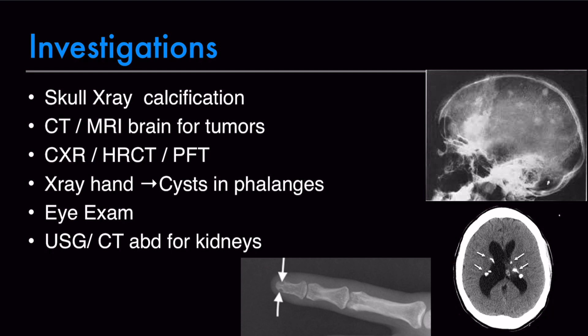For investigations, you can do a skull X-ray to look for calcifications, and a CT scan or MRI to look for CNS tumors. A chest X-ray, HRCT, and pulmonary function tests can be done to look for lung abnormalities. An X-ray of the hand can look for cysts in the phalanges. An eye exam via ophthalmology referral is also recommended, along with an ultrasound or CT abdomen to look for kidney abnormalities.